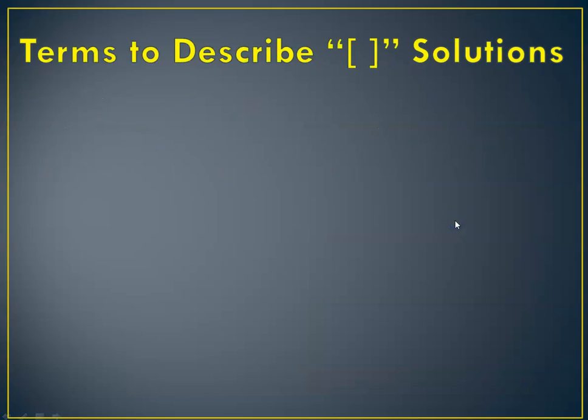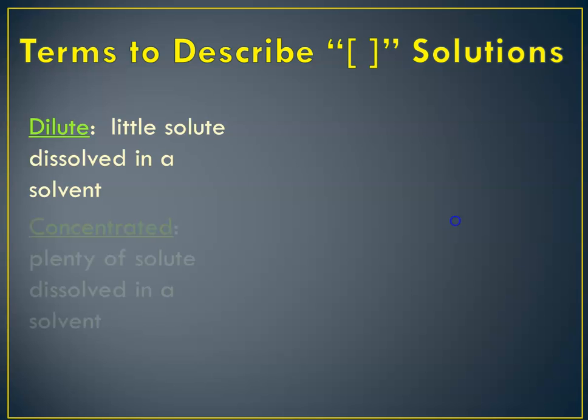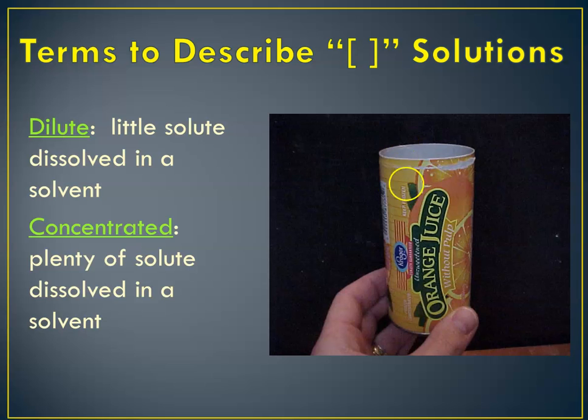So we have terms that we use to describe the concentration of solutions. So general terms would be dilute, little solute dissolved in a solvent, as opposed to concentrated, which means plenty of solute dissolved in a solvent. So here is something that we don't even see anymore, but this is concentrated orange juice. You might see lemonade come this way, and you dilute it up three cans of water for every one can of concentrate.